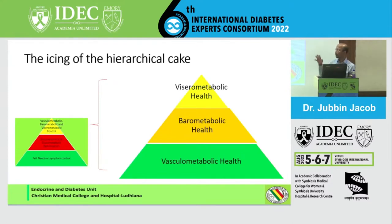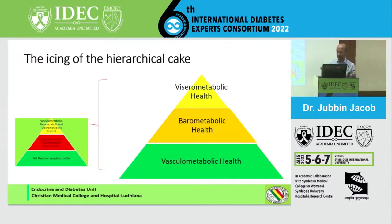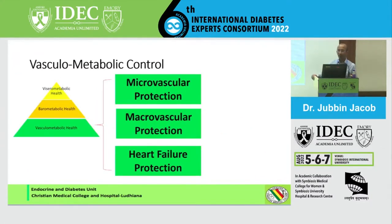That is the tip of what I call the icing on the cake. If we can do all this as a pyramid with a single drug, it's a great idea — it becomes very easy because I do not have to refer to the wheel and decide which things I want to do. In vascular metabolic health, I am talking about three things: microvascular health, macrovascular health, and now, increasingly, heart failure protection.